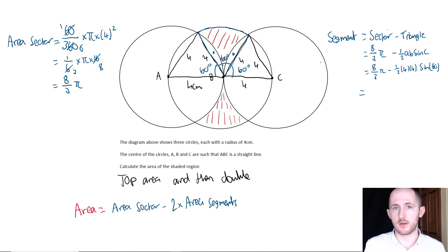Remember, it's not a right angle triangle, we can't use base times height over 2. So that gives us 8 pi over 3 minus a half times 4 times 4 times sine 60.